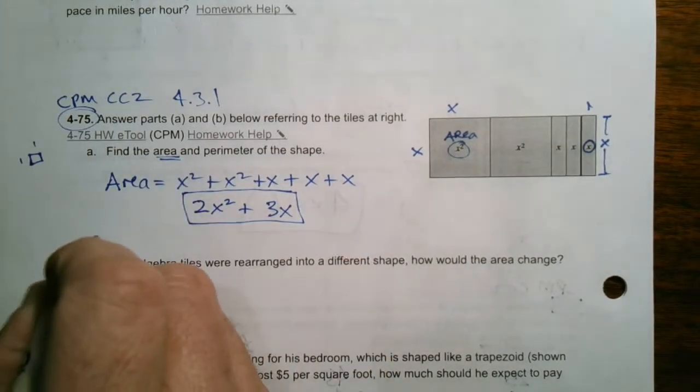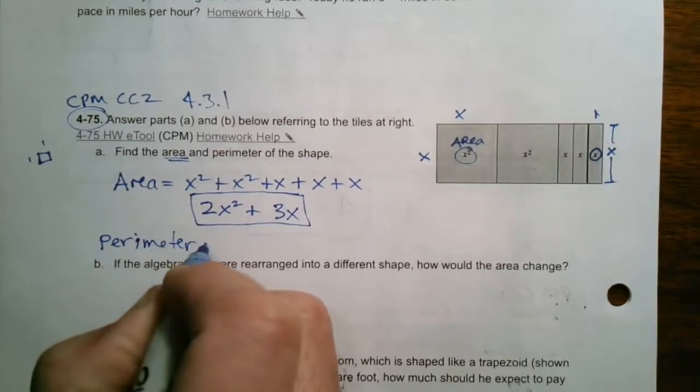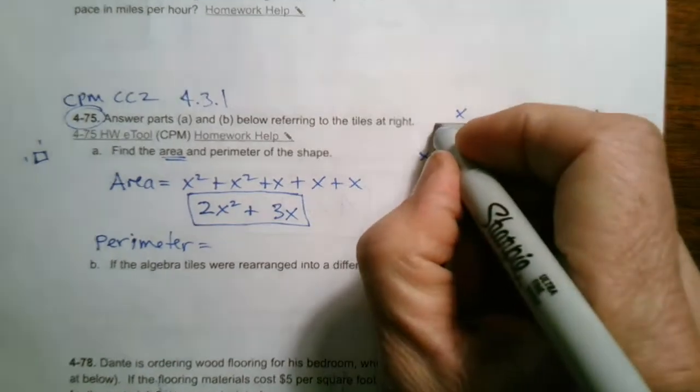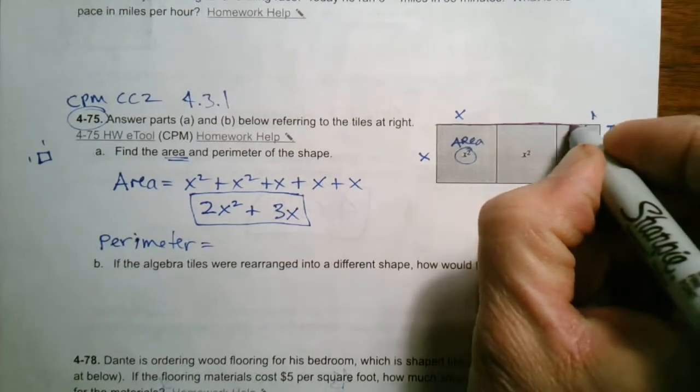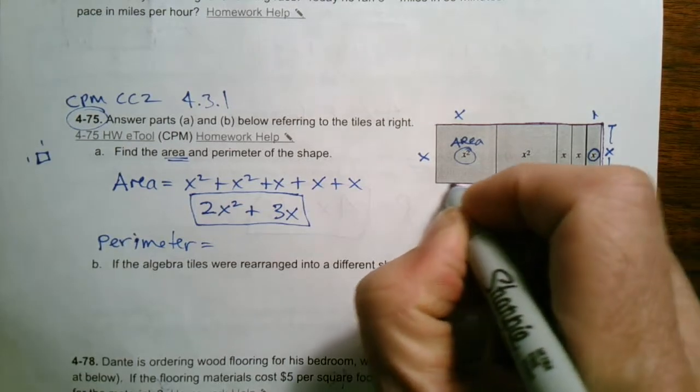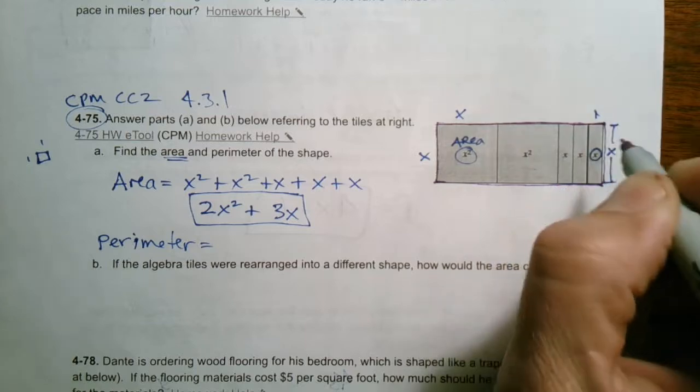So then the perimeter will do something similar. Perimeter, remember again, perimeter is your distance around. So if I was going to walk, this is my property here. I'm going to walk around my property. That's the perimeter, walking around the perimeter.